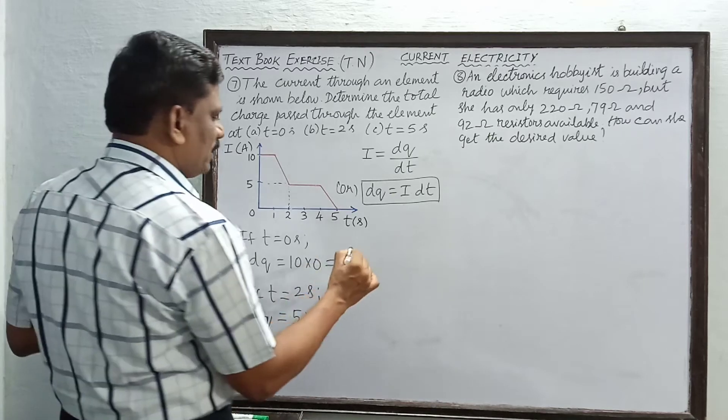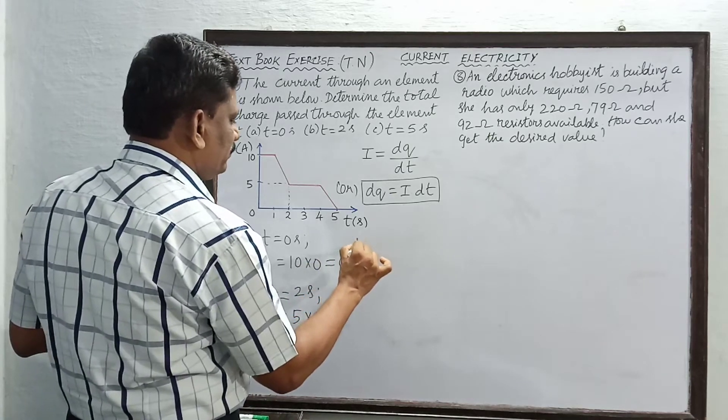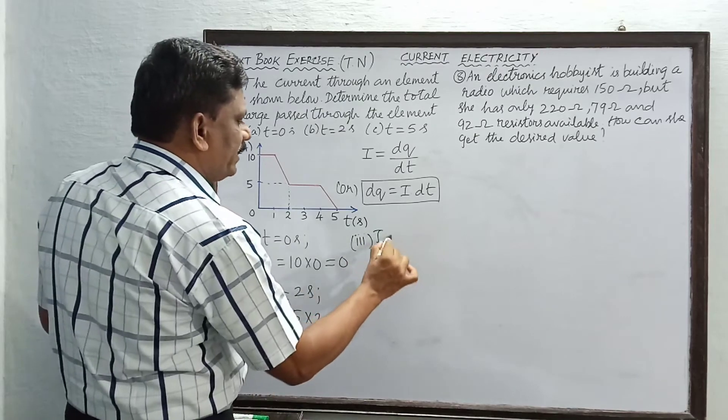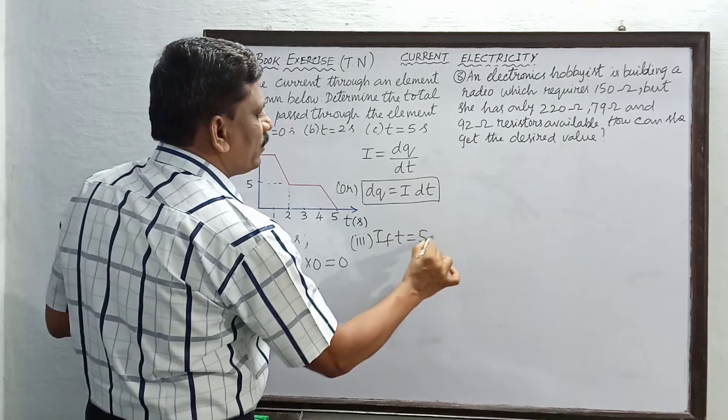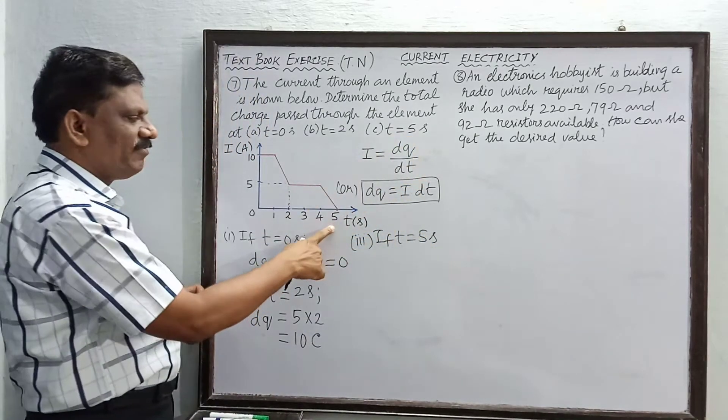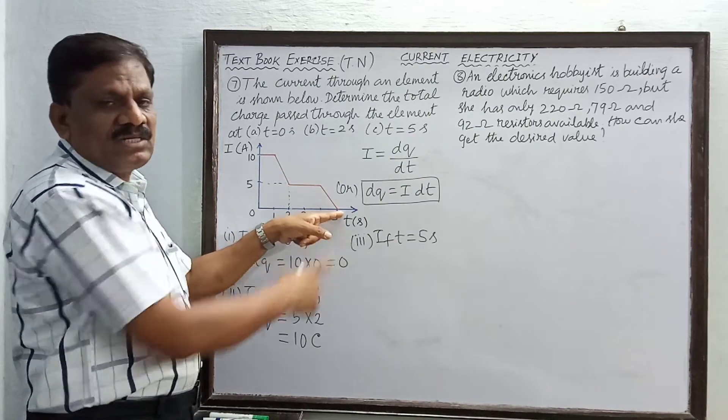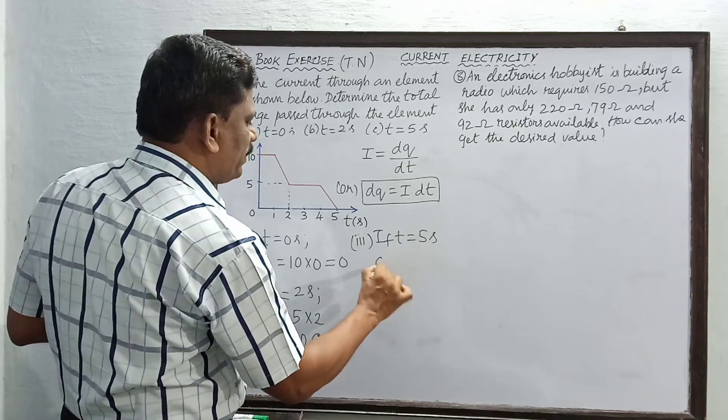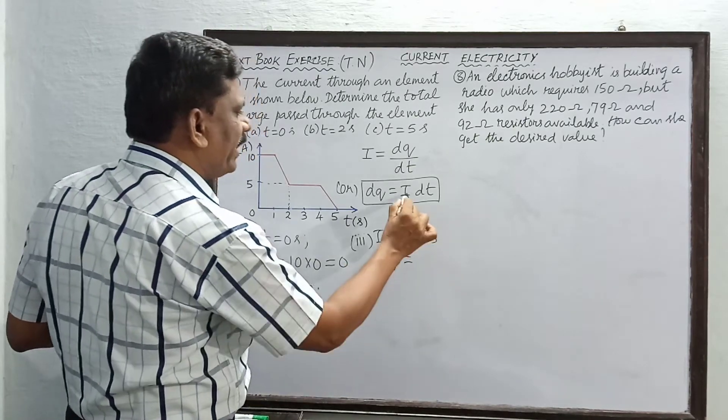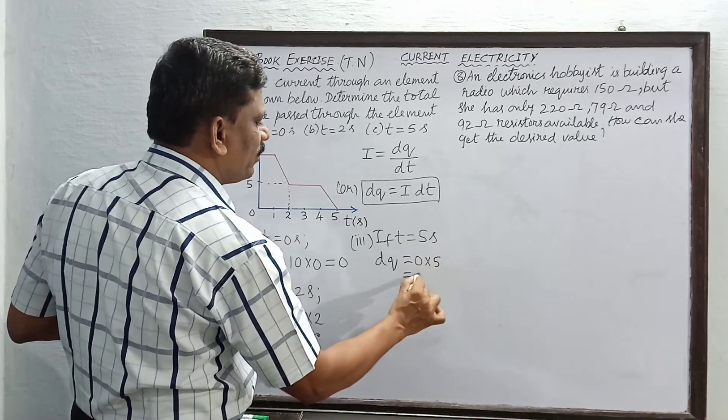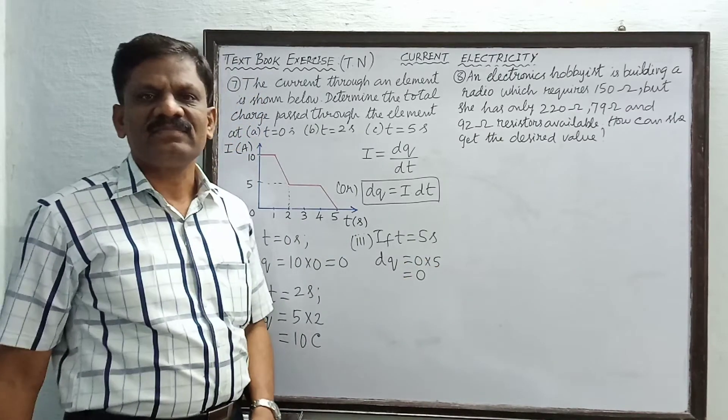And the third case, time t is equal to 5 seconds. At 5 seconds you can see that the graph has touched on the x-axis, so the current is 0. Therefore dq must be equal to i, i is 0. So 0 into 5 equals 0.